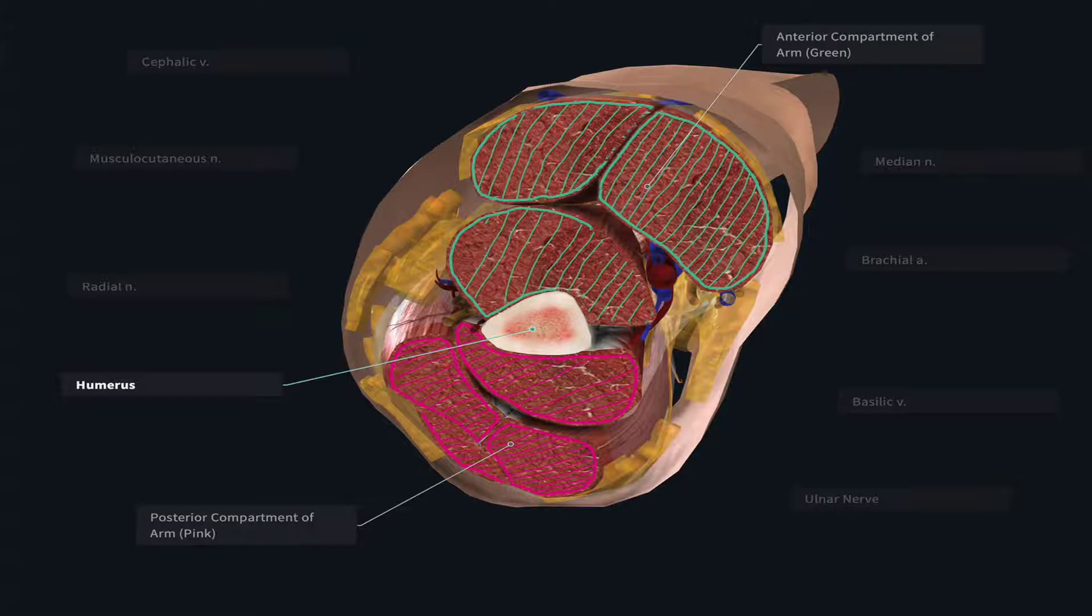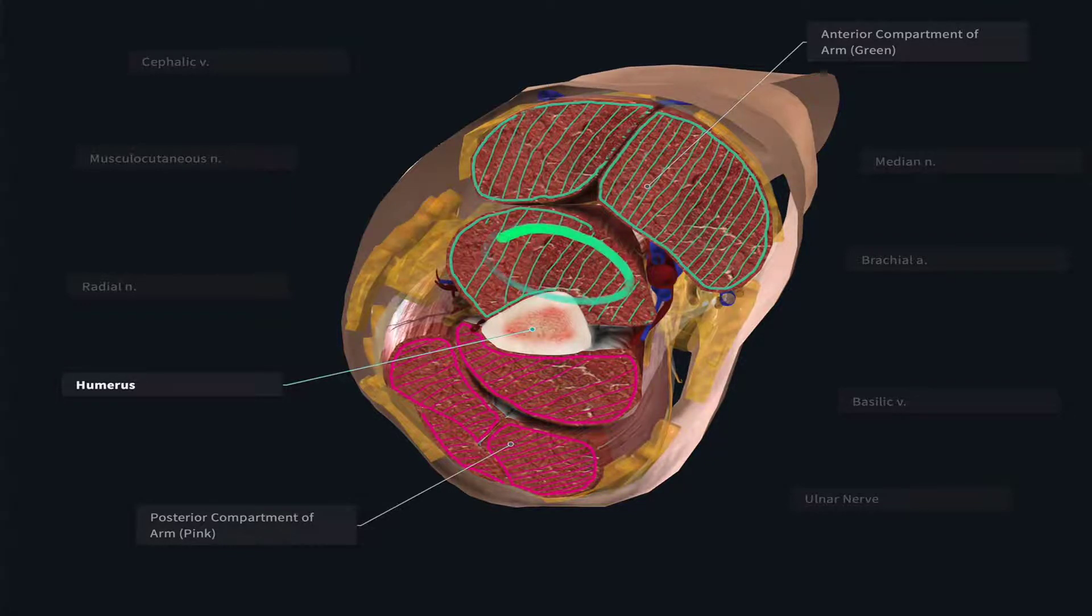Anterior to the humerus, we are going to have the anterior compartment of the arm, with three different muscles shown here in cross-sectional cut. We're going to go into more detail about what these muscles are, but for now, realize there's going to be a subdivision between the group of muscles located in front of or anterior to the humerus and those located posterior to it.